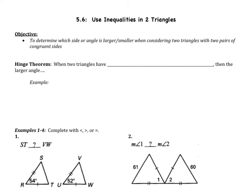That idea is going to continue into this section today. We have one main objective: to determine which side or angle is larger or smaller when considering two triangles with two pairs of congruent sides. Today's video really has to do with the hinge theorem. The hinge theorem says when two triangles have two pairs of congruent sides, the larger angle is located across from the larger side.